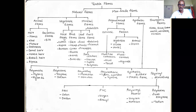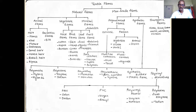Seed fibers are extracted from seeds by the process of ginning. Bast fibers are extracted from the bast or stem of plants, leaf fibers from the leaves, and fruit fibers from the outer covering of fruits. For animal fibers, we cut the hair growth of animals and use it as hair fiber. In the case of silk, a secreted liquid solidifies into a filament, which is then used for textile purposes.